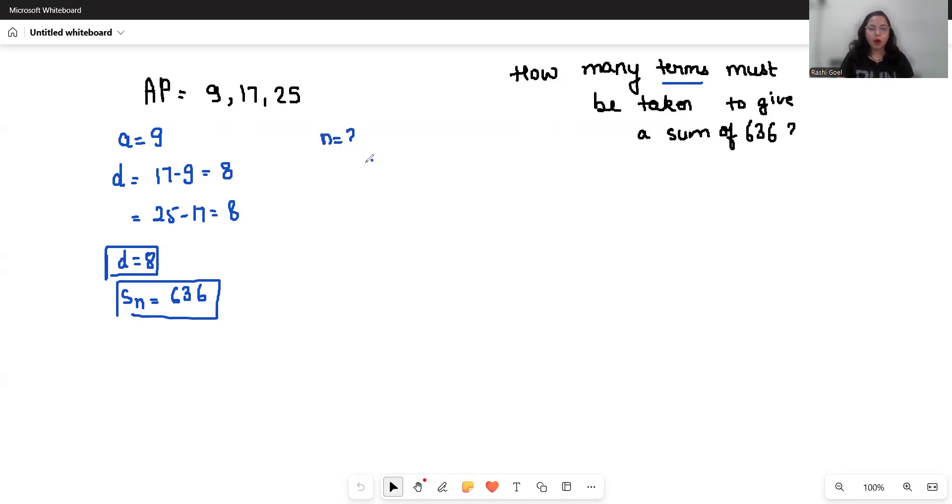So we will use the formula of Sn, that is n by 2 times 2a plus n minus 1 times d. So Sn is 636, a is 9, and we have to find n. d is 8.